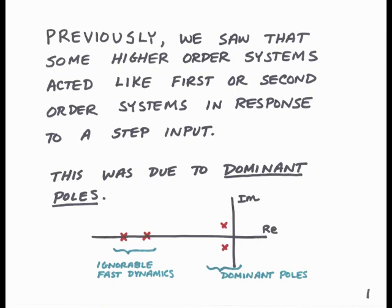For example, let's suppose we have a transfer function with the poles marked in the diagram at the bottom of the page. We have two poles that are complex and close to the origin, and two other poles that are real and far in the left-half plane. The dominant poles are the ones closest to the origin because they have the largest time constant. The two real poles far to the left have a very small time constant — very fast dynamics. So this system could be approximated as a second-order system with just the dominant poles.